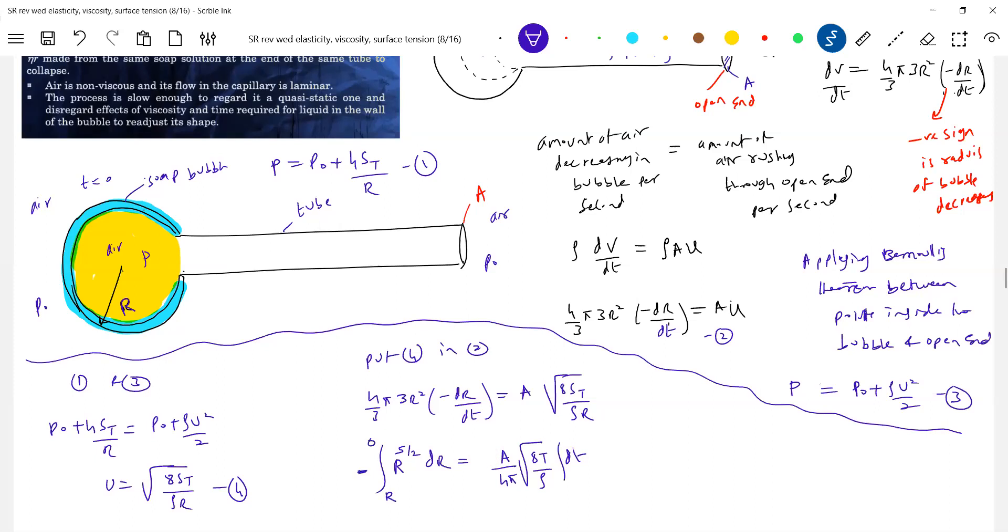Because dt is available. So I got expression for this. So 4 by 3 pi 3 R square. A into this will be, U will be root of 8 ST by Rho R. I think 1, 3 we can eliminate it. So what all we get? Minus dR equal to A by 4 pi into root of 8 ST by Rho. R to the power of minus 5 by 2 dR. Initially R, finally 0. This is the time. Anybody just solve it and give the final answer. Delta T0.